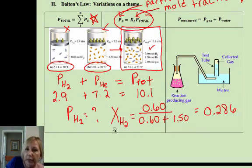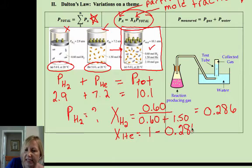Now we could get the moles of helium pretty readily because a fraction is out of 1. A percent is out of 100, a fraction is out of 1. So my mole fraction of helium would be 1 minus 0.286, and that's going to equal 0.714.